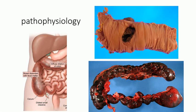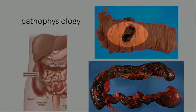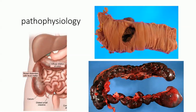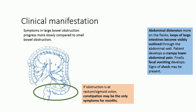If the ileocecal valve is non-competent, it allows contents to flow back — you can see dilated small intestine in this situation. But if the ileocecal valve is competent, the contents do not go back and the cecum gets more distended. You can see dilatation of the colon in this picture, and also perforation. When the bowel can no longer stretch, perforation happens. Cutting off blood supply leads to ischemia and ultimately necrosis — an emergency.